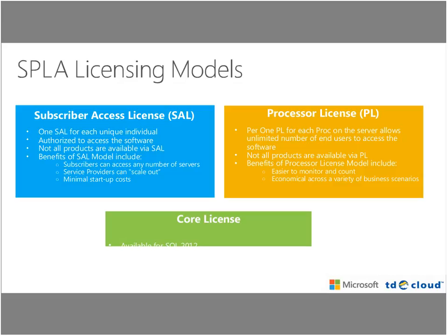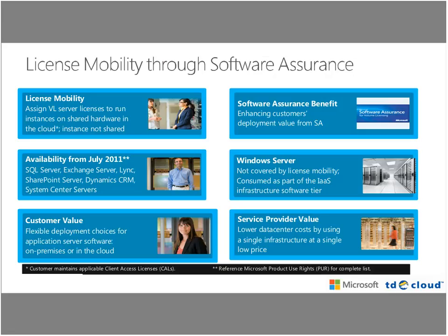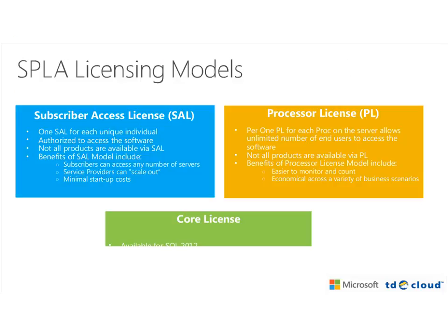Processor licenses cover one processor for an unlimited number of users — two processors on one box equals two licenses. Benefits include ease of counting servers rather than users. Windows and SQL almost always go processor license. There used to be more choice between user and processor licensing in SPLA, but now it's largely standardized. Licensing Windows by user doesn't make sense, so a processor license is an inexpensive way to have unlimited users.